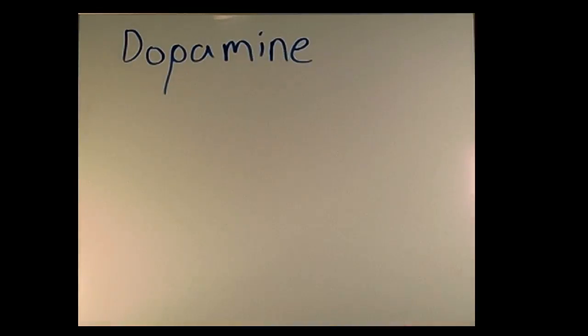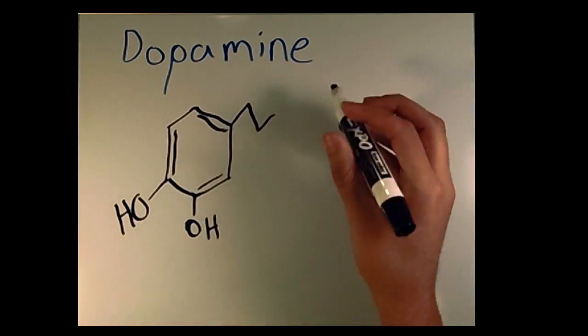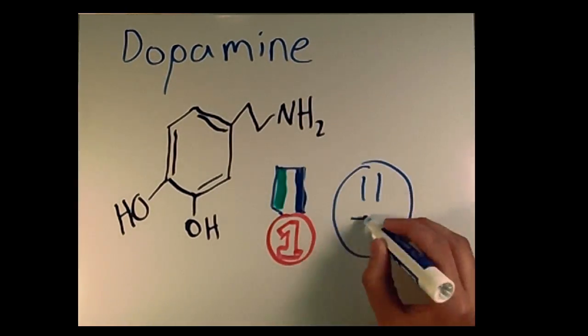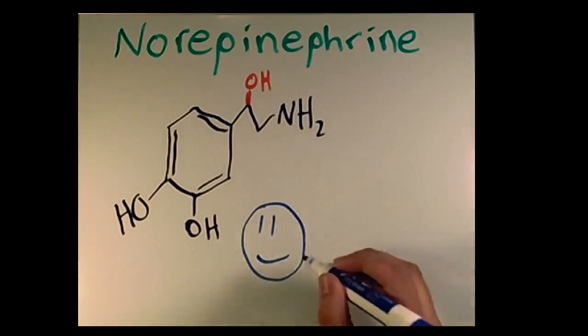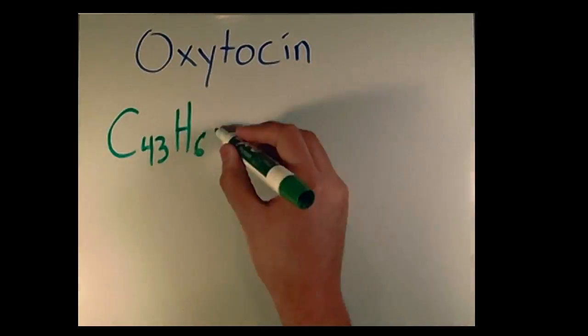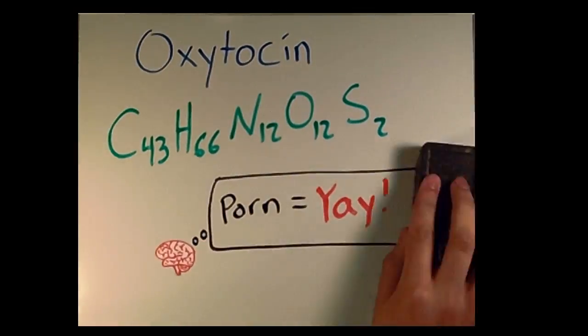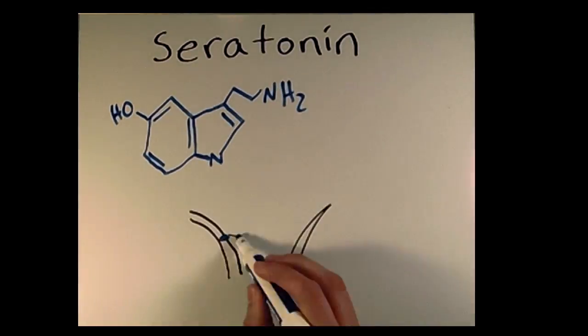Dopamine, which makes you feel good, rewards you for doing something essential to survival such as eating, exercising, and making babies. Norepinephrine helps you remember. Oxytocin helps create an association of porn and good feeling. And serotonin causes you to feel relaxed.